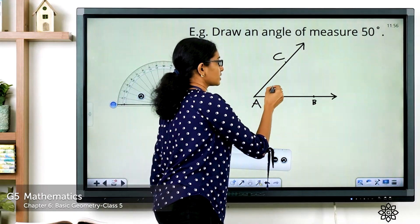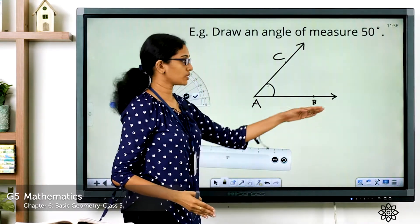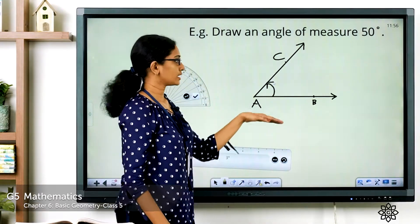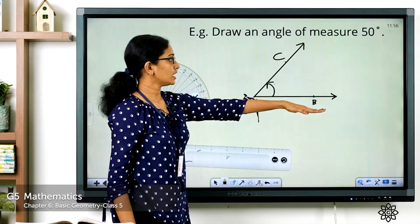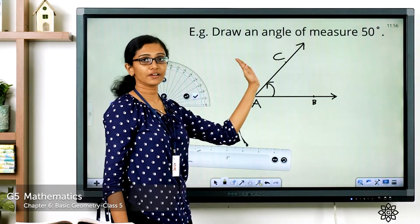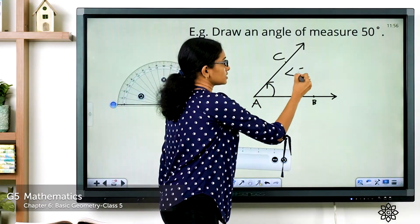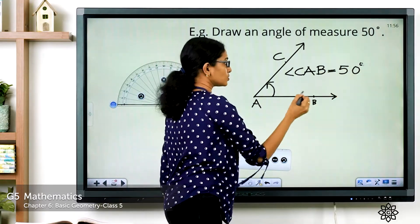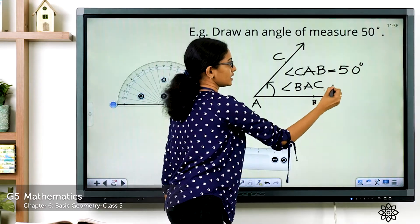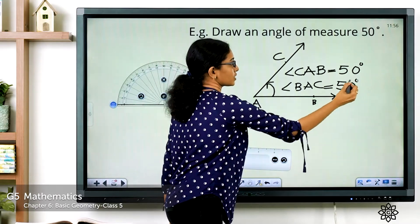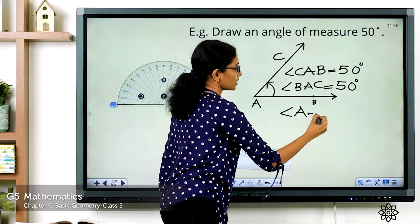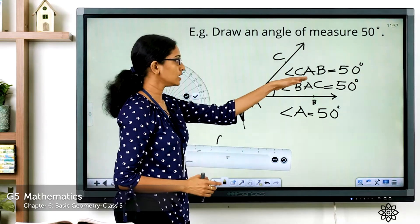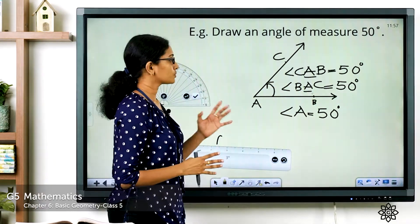We have got an angle which measures 50 degrees. It is also needed that you show the measurement along with its name. Since we took the measurement using the inner scale and the angle was increasing towards the left, put the arrow like this. This is angle CAB equal to 50 degrees — you can also write angle BAC or angle A equal to 50 degrees. Note that when using three points to name an angle, the vertex should be written in the middle.